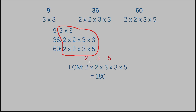So solving for the least common multiple using prime factorization is a series of steps: list the prime factorization of your numbers, stack them on top of each other, pull out all the numbers represented — making sure each is represented the most number of times it appears in any of the numbers — then multiply those together to get your answer.